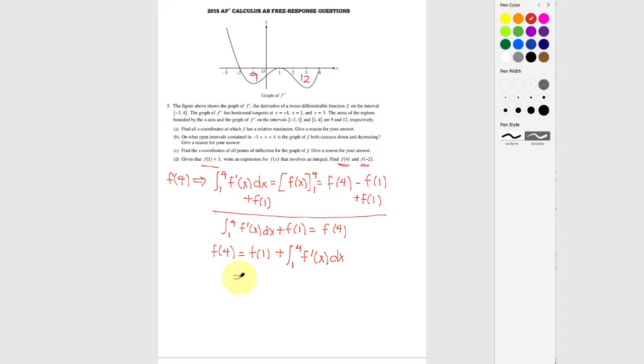Now I have some numbers to plug in. I know f of 1 is 3 because that's given information, and then the area under my curve from 1 to 4 under my f prime curve is negative 12 because I'm going down. So minus 12 is equal to negative 9.